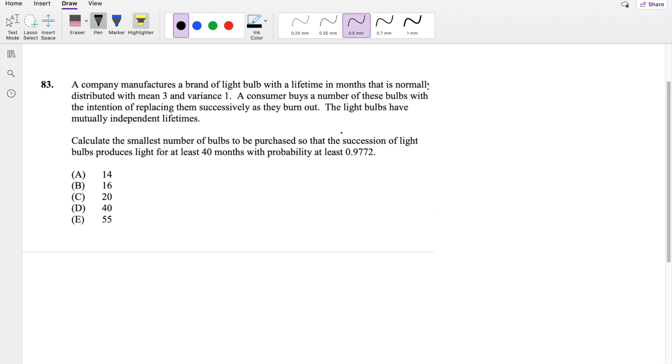They tell you a company manufactures light bulbs with a distribution of mean 3 and variance 1. So variance of x is equal to 1. A customer just keeps buying these light bulbs one after the other, and these are all independent.